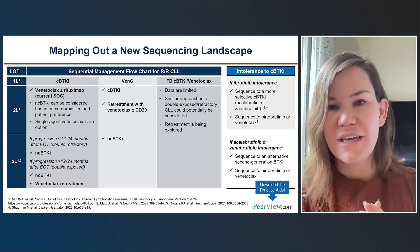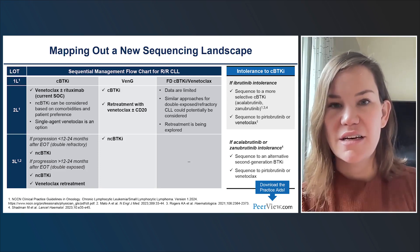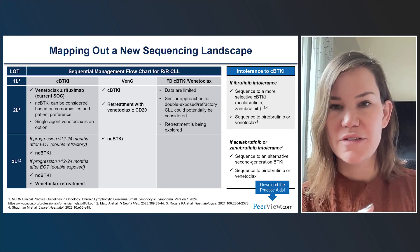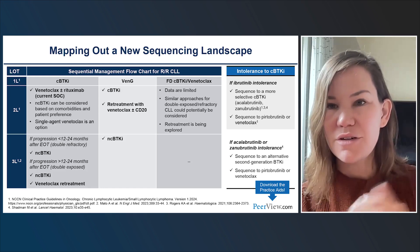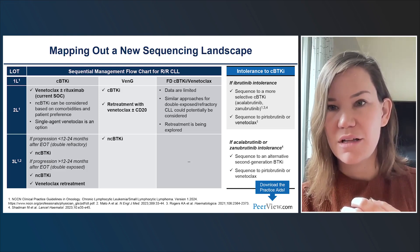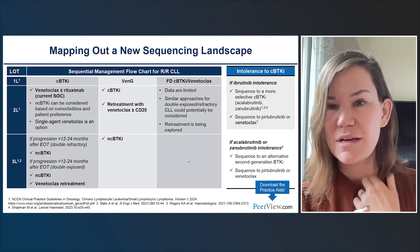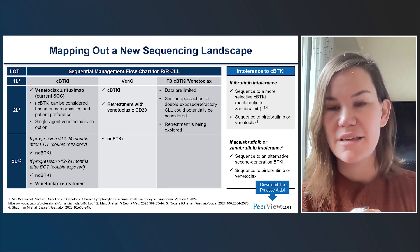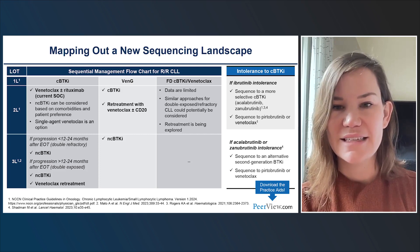Q&A: On pirtabrutinib's activity in DEL17P and high-risk CLL — from experience as a BRUIN investigator, high-risk patients treated on the trial responded impressively. The forest plot from the BRUIN trial shows response rates very similar across high-risk features including DEL17P and TP53 mutation. Progression-free survival is also very similar across these subgroups. The drug performs phenomenally well even in the highest-risk patients, with an approximately 80% overall response rate. This makes pirtabrutinib a clear first-choice option for patients who have failed prior standards of care.